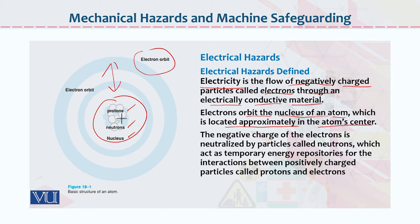The negative charge of the electron is neutralized by particles called neutrons, which act as temporary energy repositories for the interactions between the positively charged particle called proton and the electron.